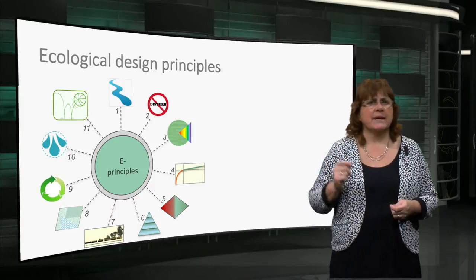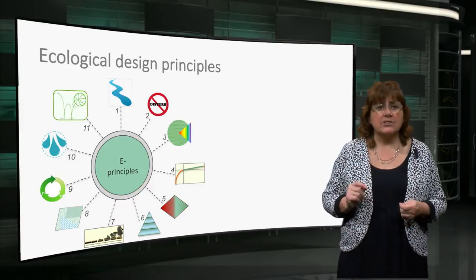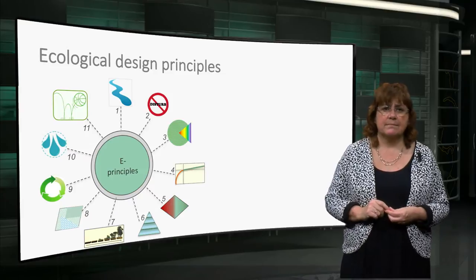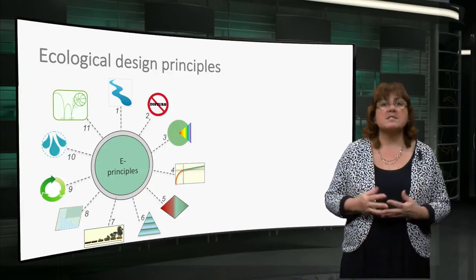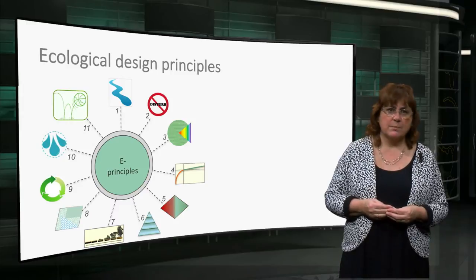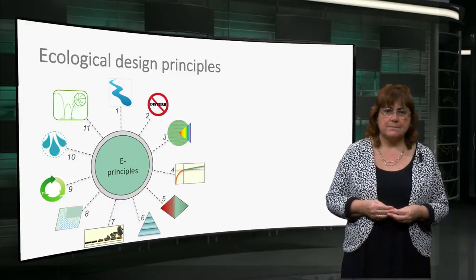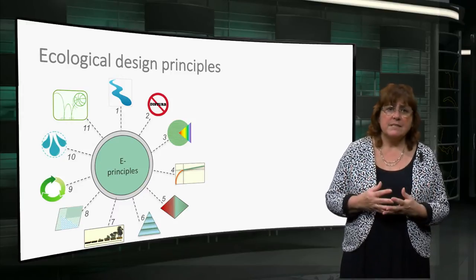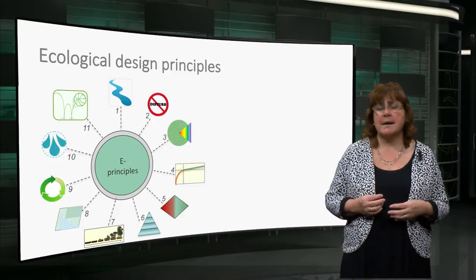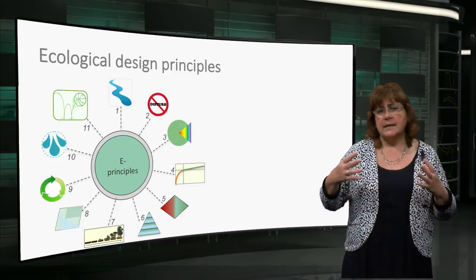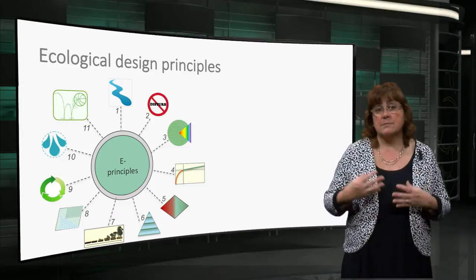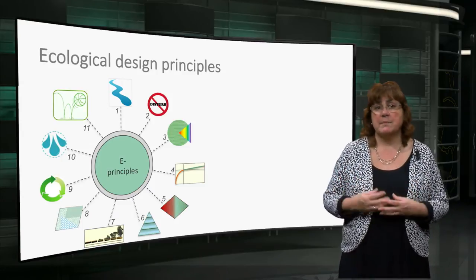But what do I mean by the character and functional integrity of the ecosystem? Let me explain each of the eleven ecological principles. If each of these principles are applied fully across multiple time and space scales, the inherent character and the functional integrity of the ecosystem should be maintained.